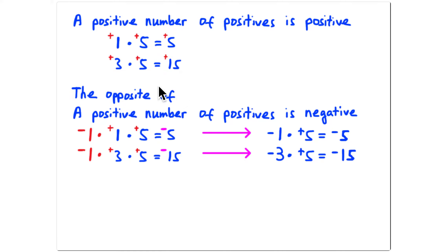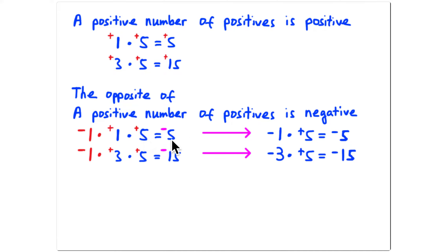If you take the opposite of a positive result — multiplying by negative one means taking the opposite of that amount. The opposite of a positive five is negative five, and the opposite of positive 15 is negative 15. So: negative one times positive one is negative one, and negative one times positive three is negative three.